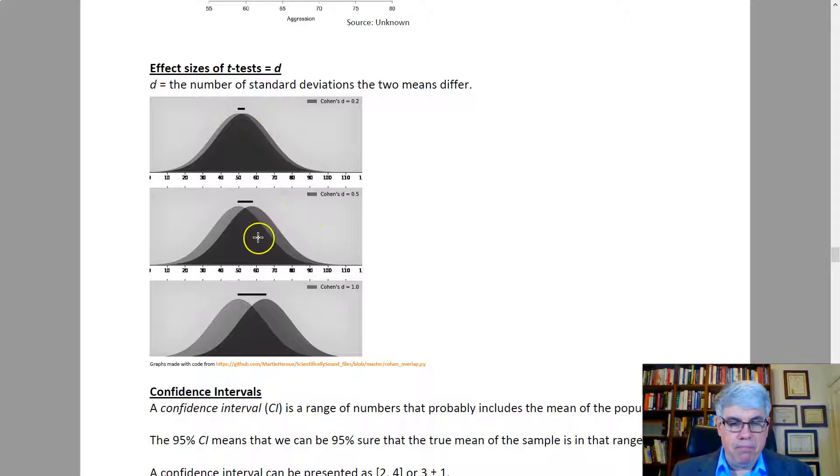As we get bigger at d equals 0.5, we can see that they're different. For example, suppose we were to measure the leadership skills of one group of managers, the light gray who didn't have training, and then the managers who did get training, the dark gray. If it turns out that d is only 0.2, we can say the training didn't make that much of a difference.